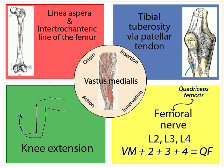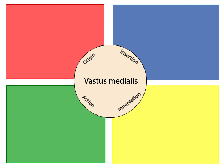Test your memory by moving your mouse pointer over the words in the circle, revealing the origin, insertion, action, and innervation of the muscle. When you're finished, click next to continue.